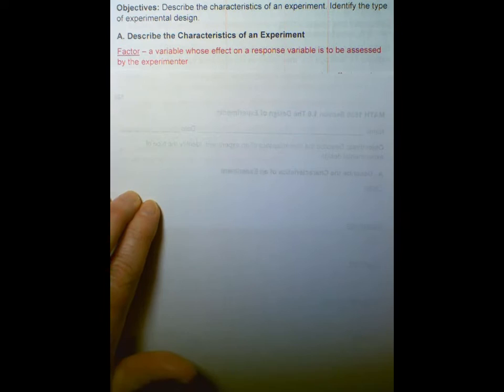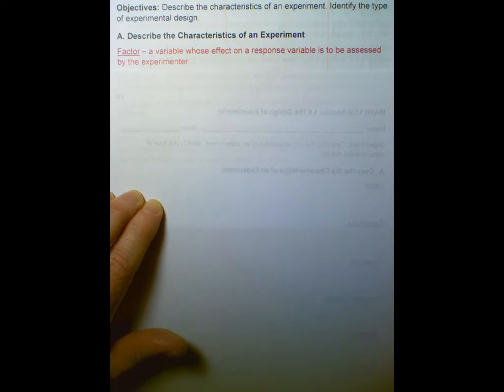We have a factor. A factor is a variable whose effect on a response variable is to be assessed by the experimenter. So what are the factors affecting our response variable? That's what we want to look at. So we call that a factor.